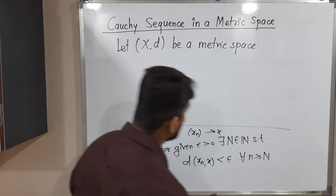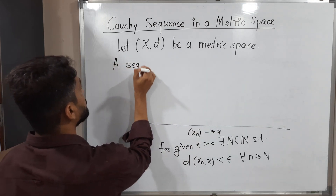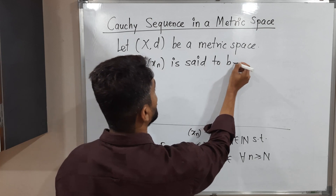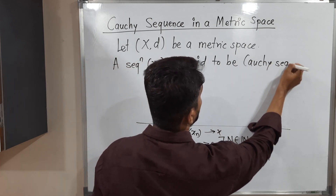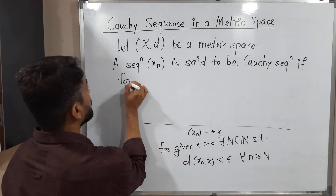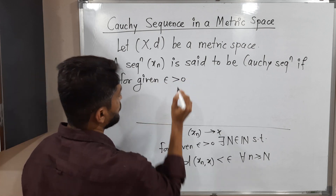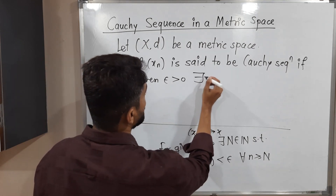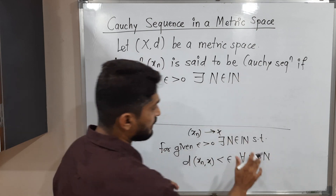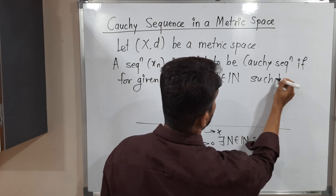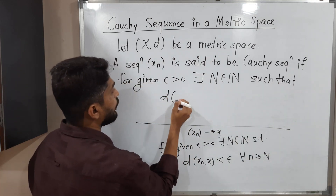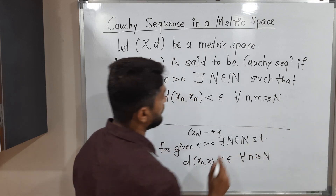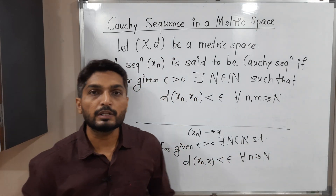Now let us talk about Cauchy Sequence. A sequence x_n is said to be a Cauchy Sequence if for given epsilon greater than 0, there exists N belonging to the set of natural numbers such that d(x_n, x_m) is less than epsilon for all n, m greater than or equal to capital N. You can easily compare this definition with the convergent sequence definition.